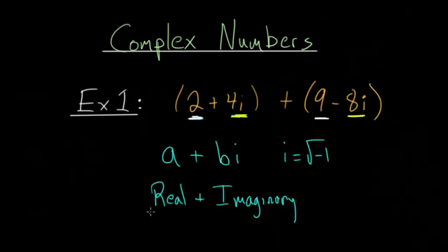And that's essentially because we write complex numbers as their real numbers plus their imaginary numbers. So let's first combine those real parts. So that would be 2 plus 9, and then we want to combine the imaginary parts,